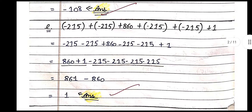In the next sum: minus 215 plus 816 plus minus 215 plus 1. First step: open the bracket. Second step: rearrange all positive numbers in front and all negatives at the back. Add all positive numbers, add all negative numbers. Then take the difference between the two results. So 861 minus 860 — the answer is 1.